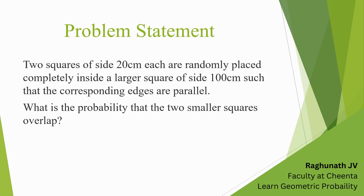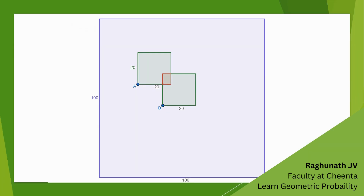Let's go to the diagram of this question. Here you have a larger square whose side length is 100 cm, and inside — completely inside — are placed the two smaller squares of 20 cm each. They are placed randomly, so out of that randomness, find the probability for which those two smaller squares overlap. For example, here the overlapped area is shaded with red. Pause the video here if you want to try the problem on your own.